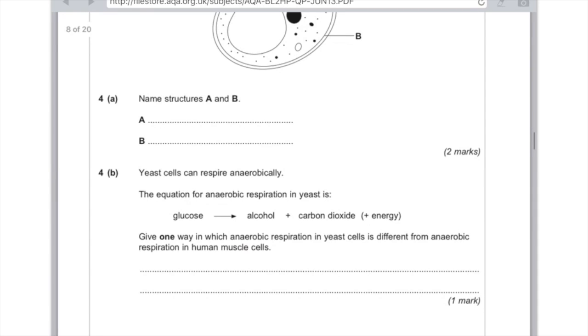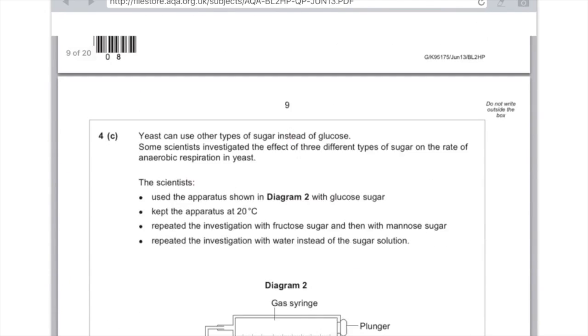Yeast cells can respire anaerobically. The equation for anaerobic respiration in yeast is glucose is broken down into alcohol plus carbon dioxide plus energy. Give one way in which anaerobic respiration in yeast cells is different from anaerobic respiration in human muscle cells. The main difference here is that in yeast, you can see that alcohol is produced as a product, whereas in human muscle cells, alcohol is not produced. The second difference you could provide is the fact that in human muscle cells, anaerobic respiration produces lactic acid, whereas in yeast cells no lactic acid is produced.